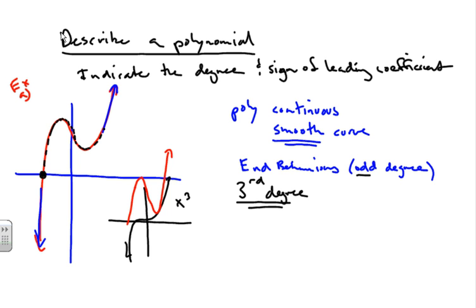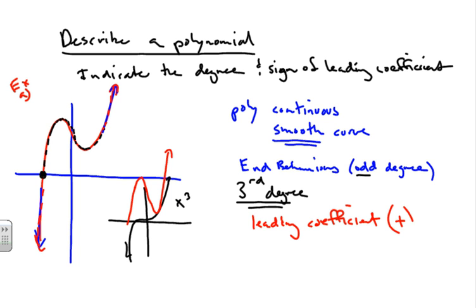The leading coefficient — because the end behaviors go up to the right and fall down to the left — has the characteristics of a positive leading coefficient. So this is a third degree polynomial with a positive leading coefficient.